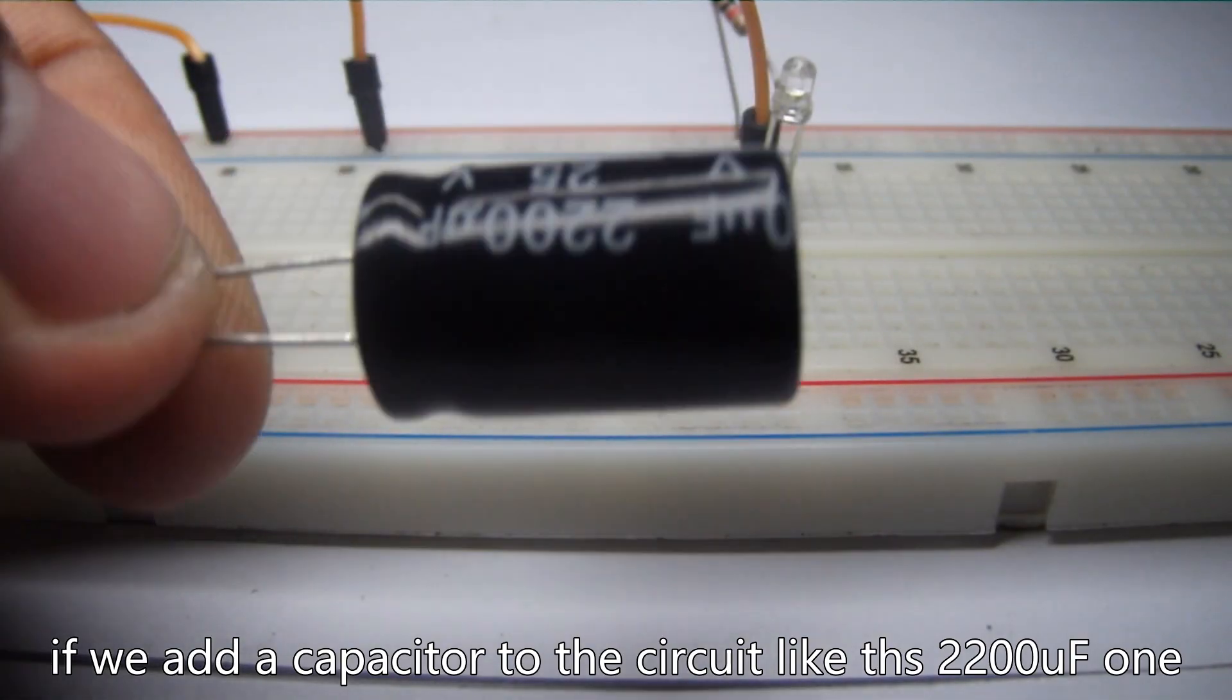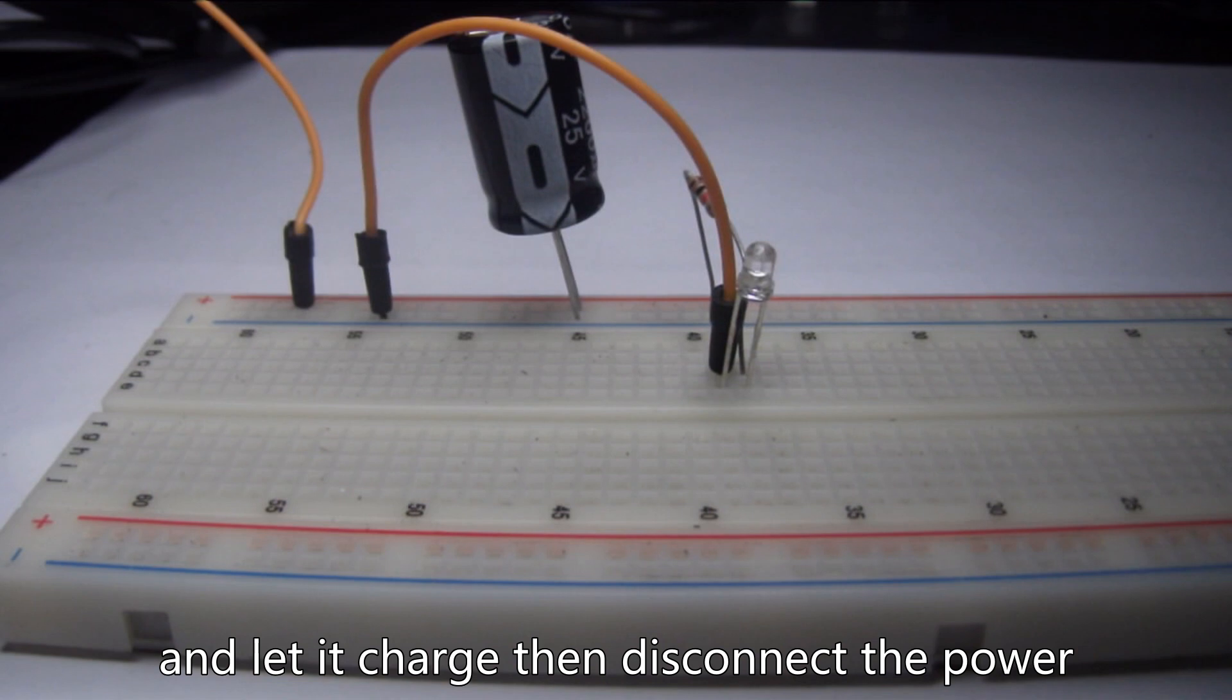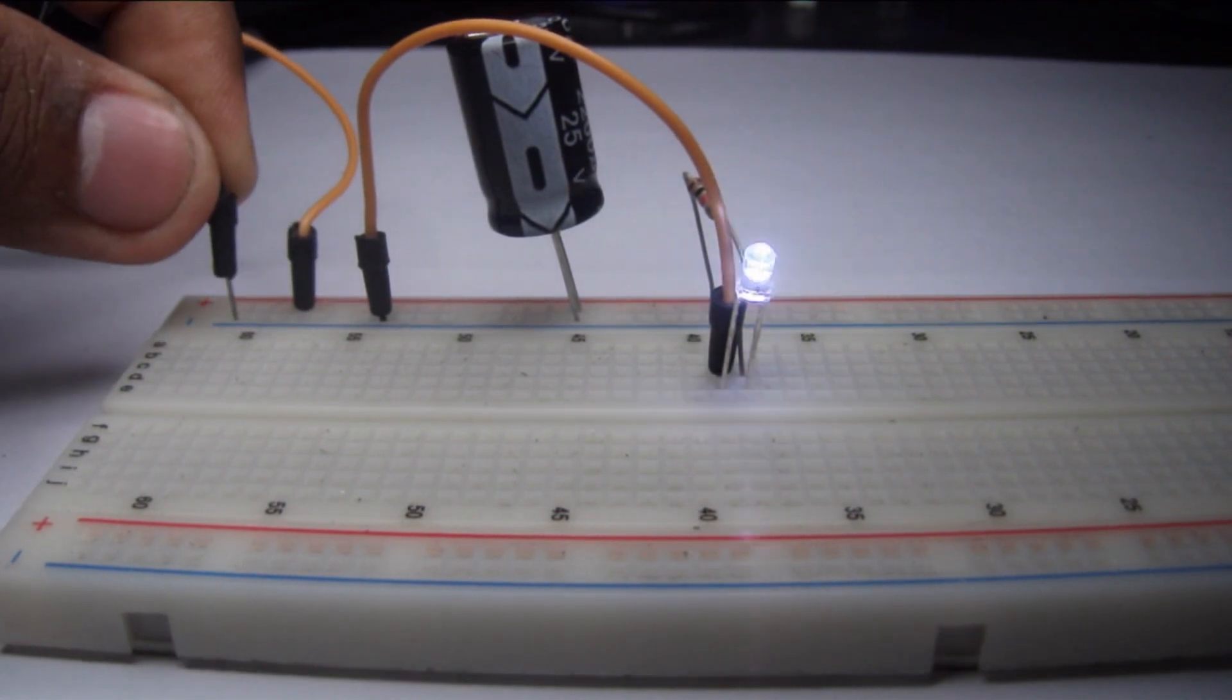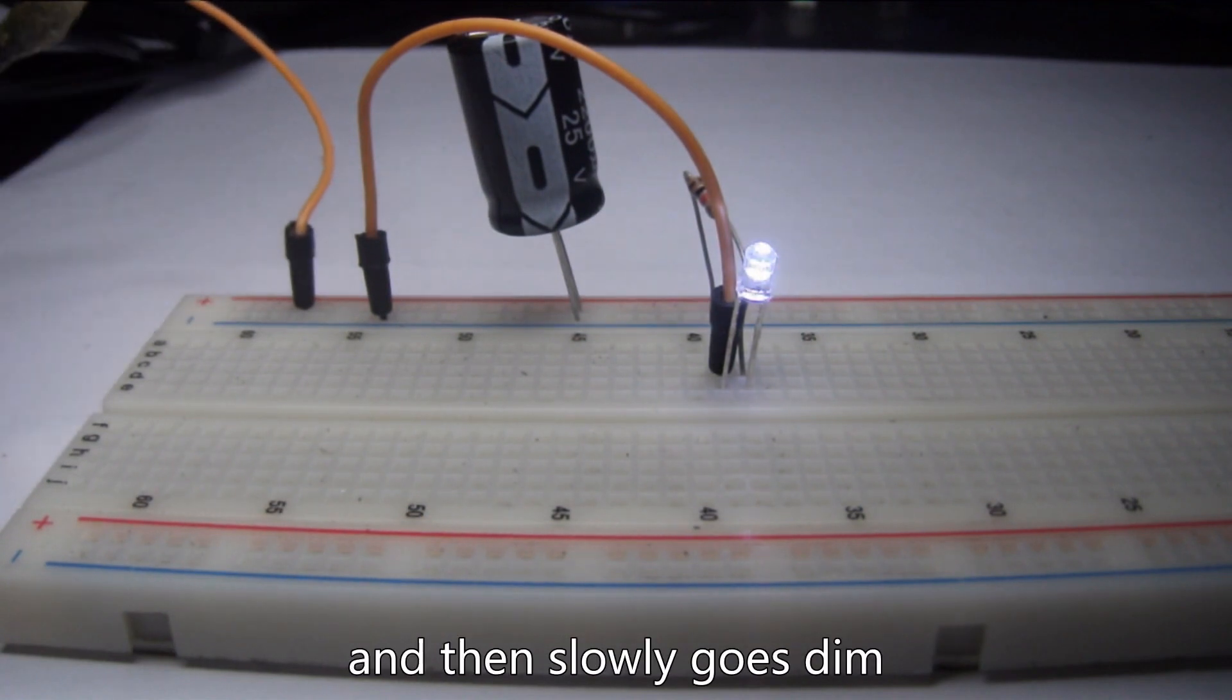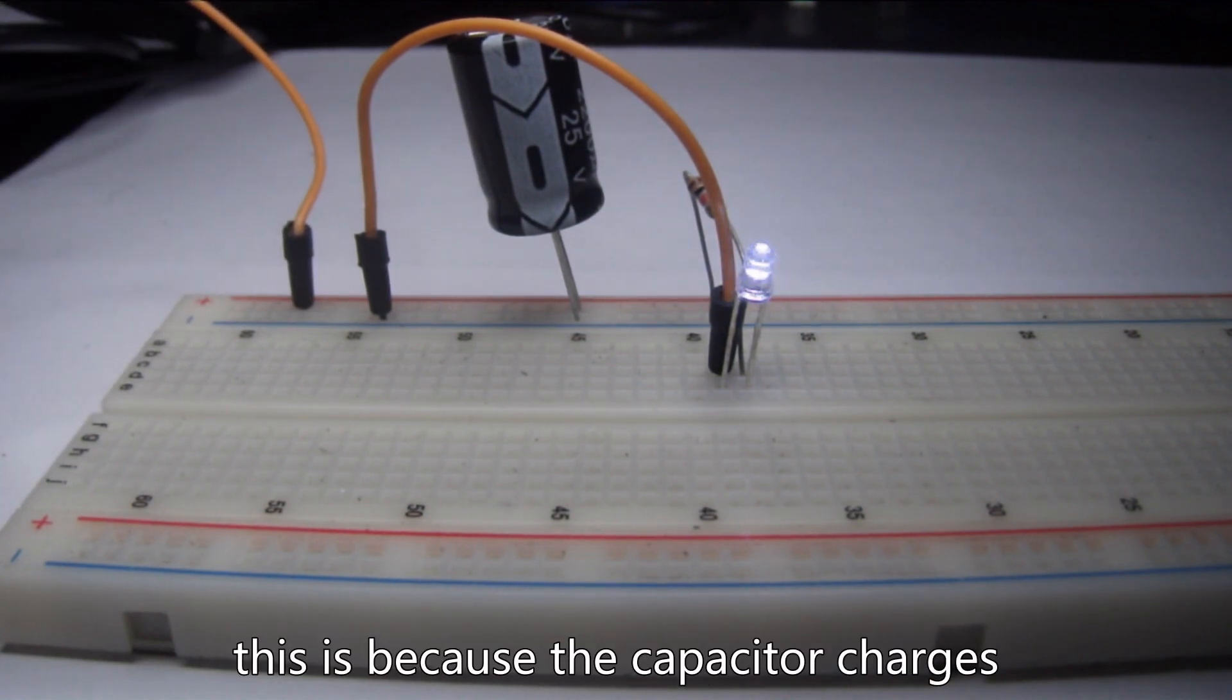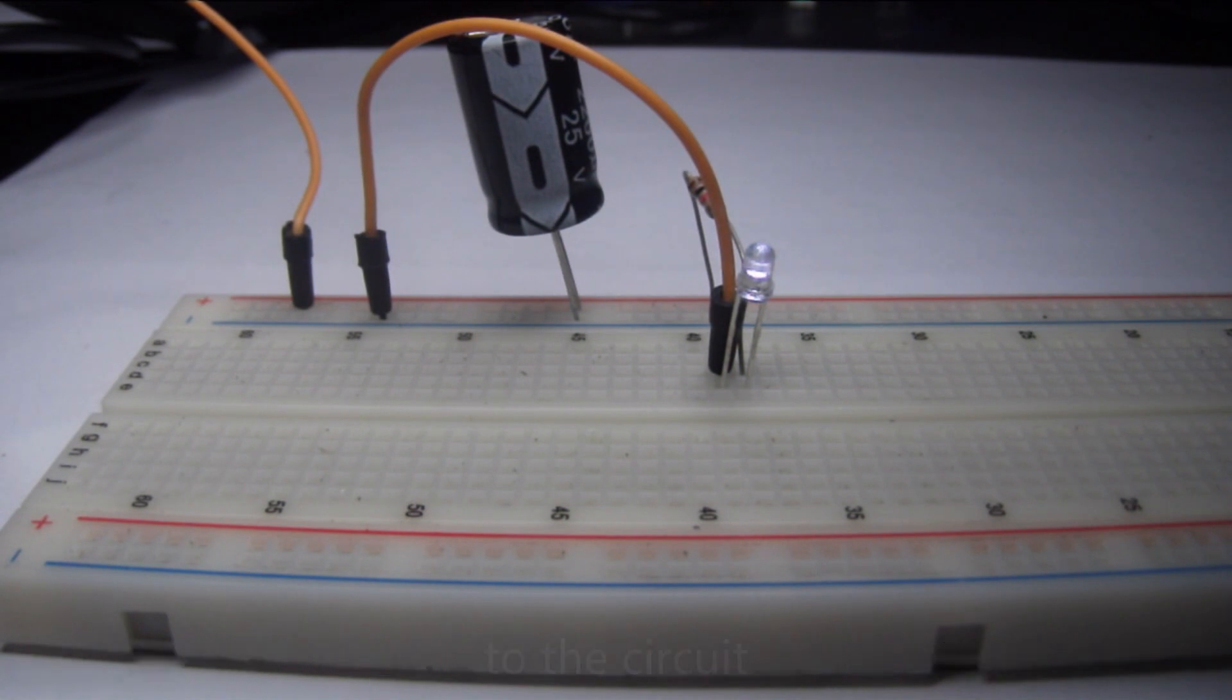If we add a capacitor to the circuit like this 2200 microfarad one and let it charge, then disconnect the power, we see that the LED will still light for a period of time and then slowly goes dim. This is because the capacitor charges and when the power supply is removed, it returns voltage to the circuit.